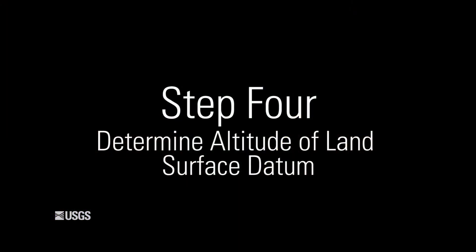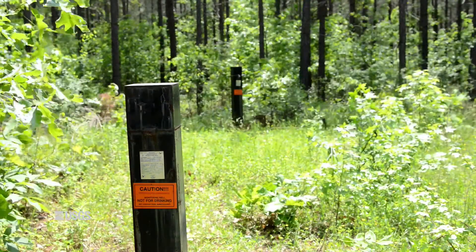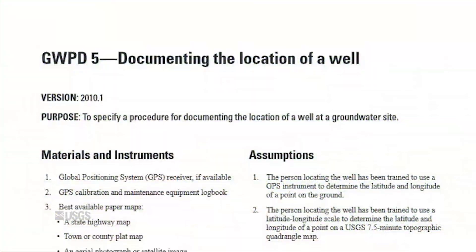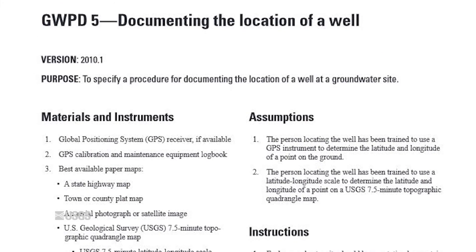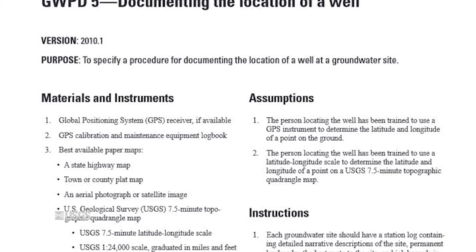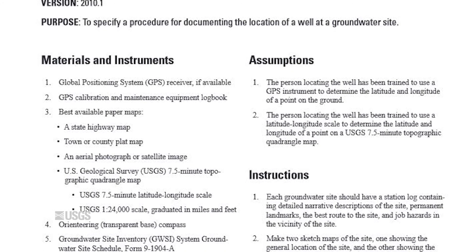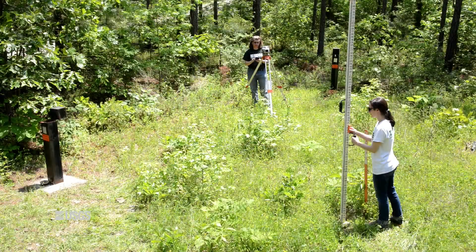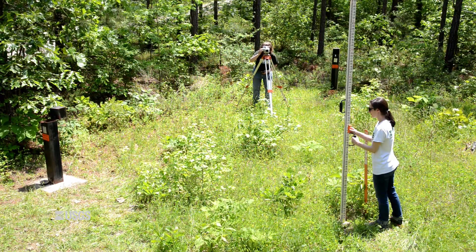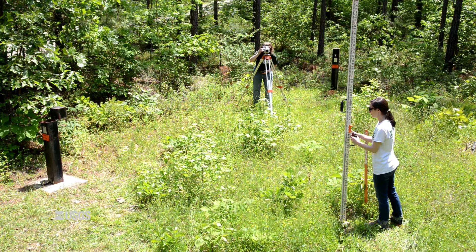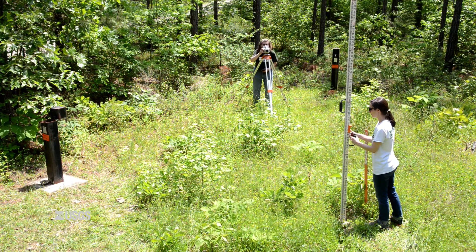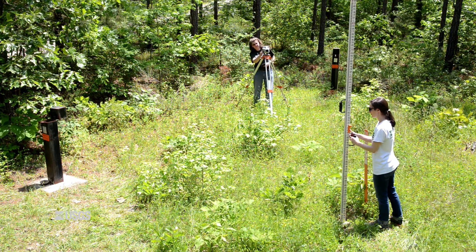Step 4: The altitude of the land surface datum must be determined for each site. Locate the well following the instructions in GWPD 5. At a minimum, the altitude can be estimated from a topographic map. Depending upon the use of the measurements from the well, it may be preferable to determine the altitude of the land surface datum using differential leveling or differential GPS techniques.